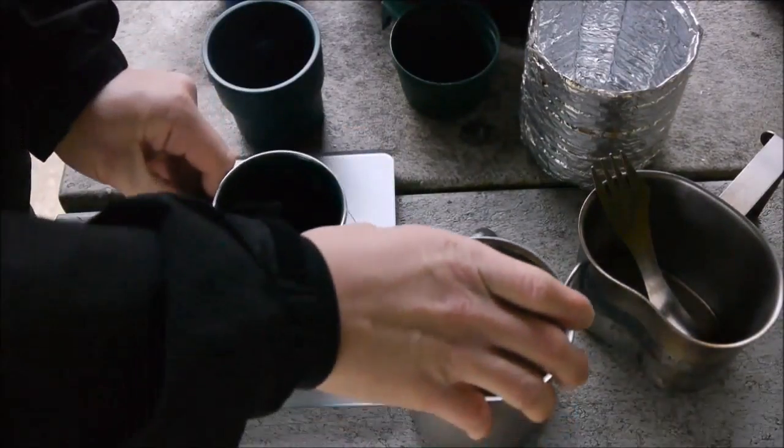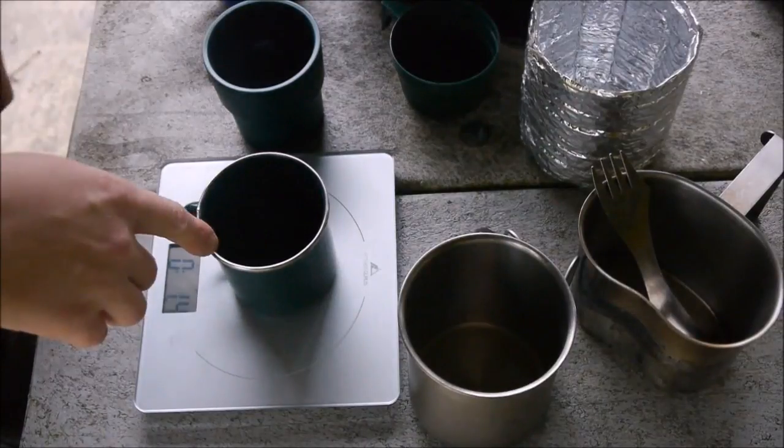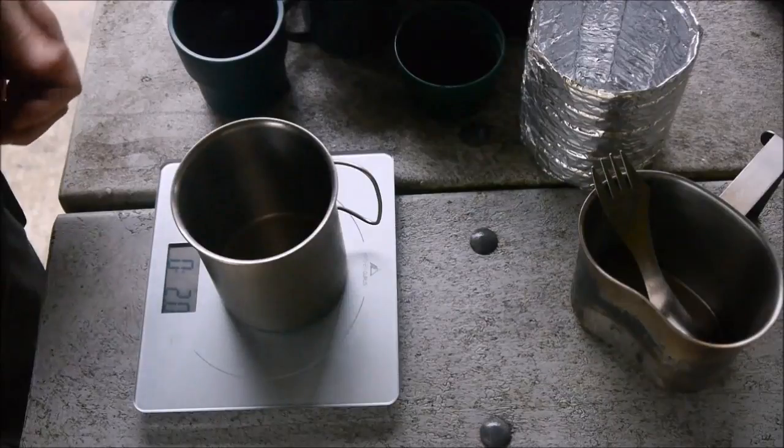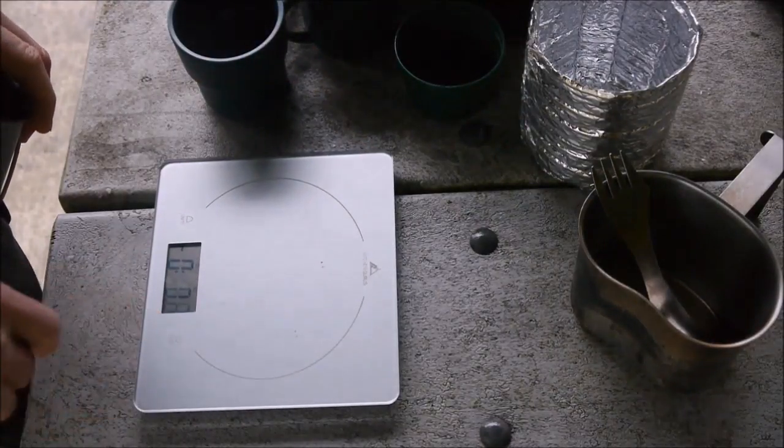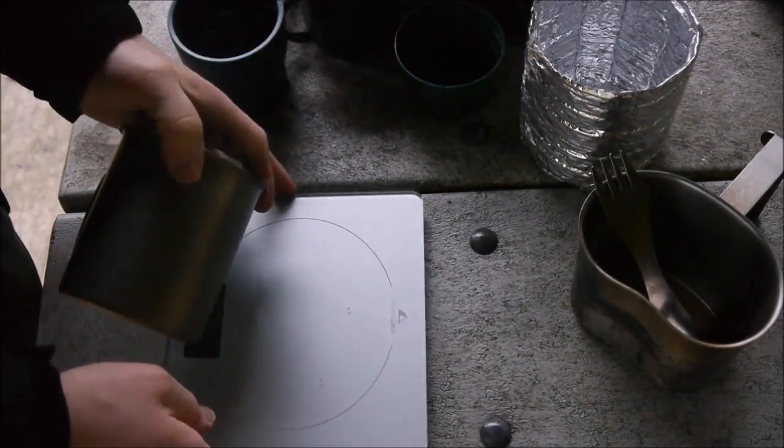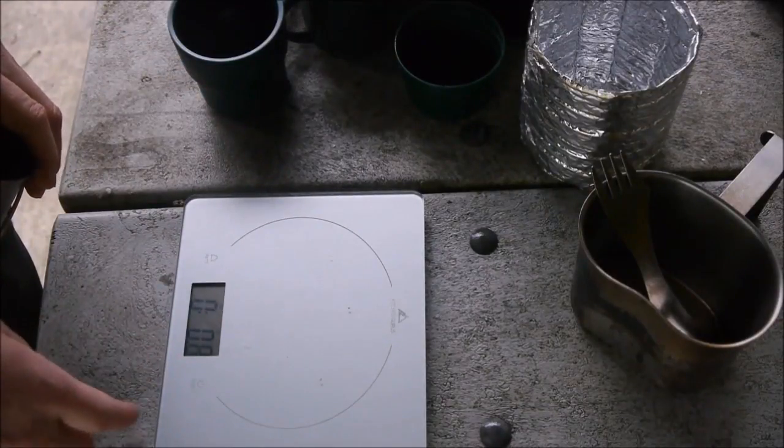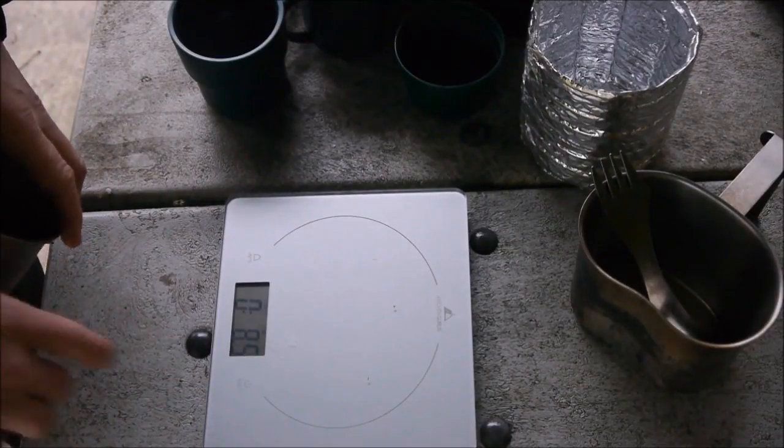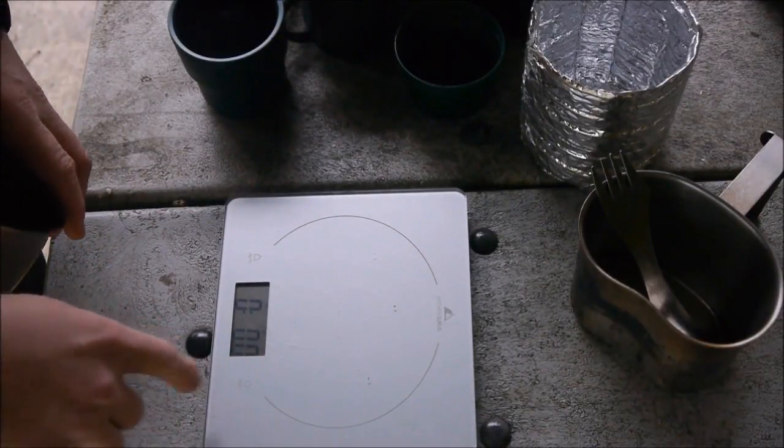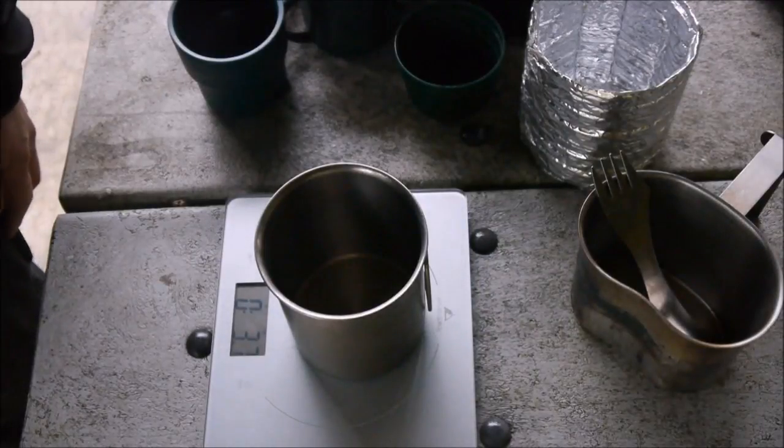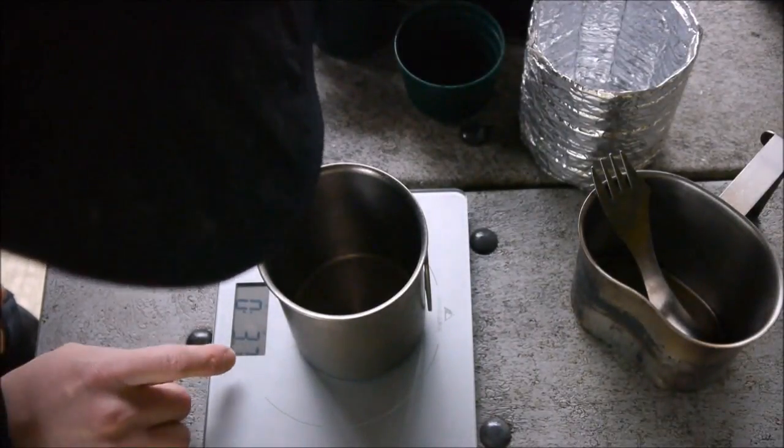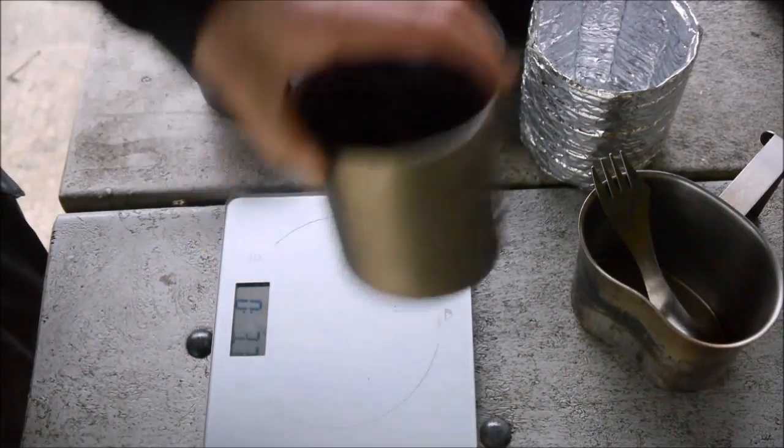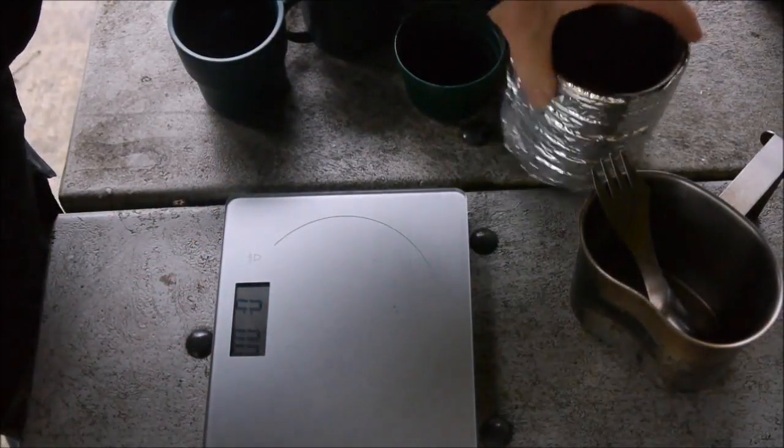The Vargo titanium mug is 1.8 ounces. So it's actually less. This is 1.4. This is actually heavier for titanium. Now it's showing 2 ounces. What is this scale doing? Come on buddy. It's zero for me. The scale is kind of being picky today.